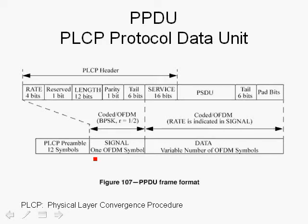Following the preamble, one OFDM symbol is allocated to what we call the signal field. The signal field is 4 microseconds long. It is encoded using BPSK, the most robust modulation used in 802.11a, at rate 1/2 with no puncturing, to provide the most reliable and robust means to transmit and decode the signal field. Like any other OFDM symbol, it includes the cyclic prefix of 800 nanoseconds.